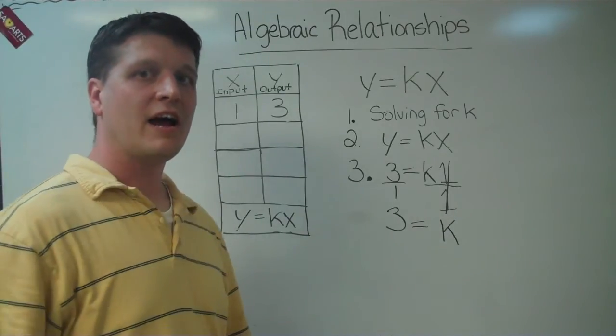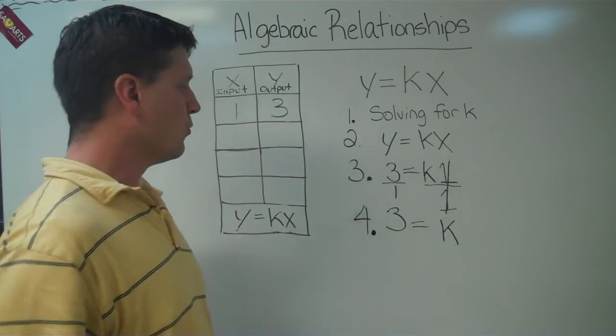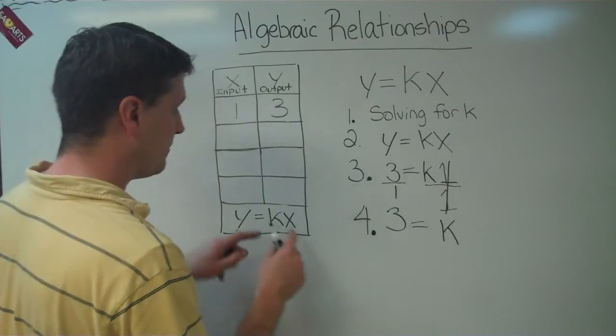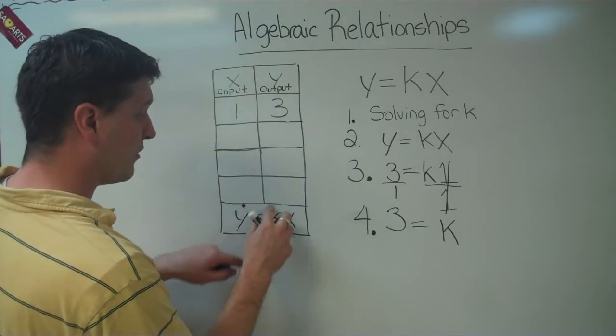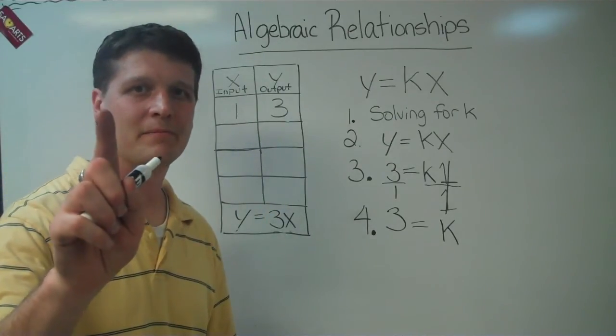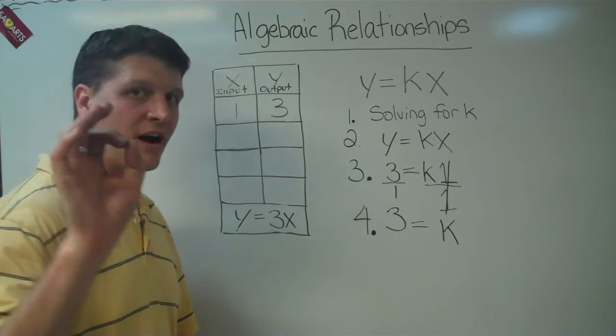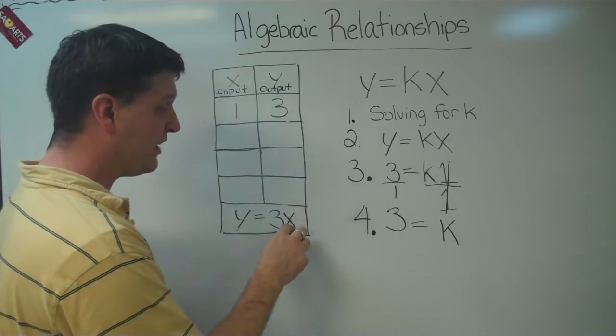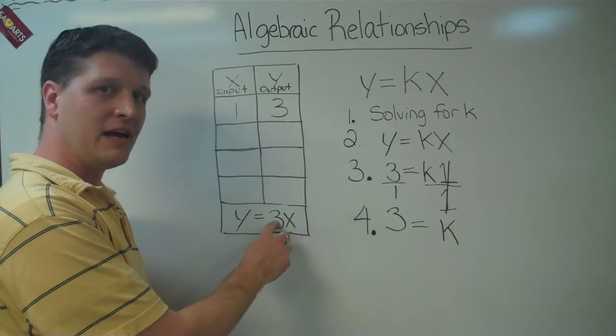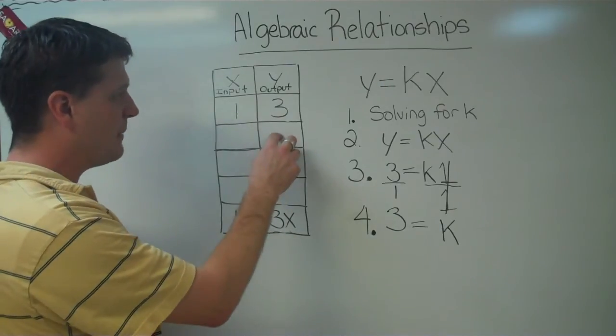Now that we have our k, this is our fourth step. We're going to take our variable that we know, and we're going to substitute it. We're going to put it right here in our little algebra box. In order to solve the rest of this table, whatever I have for the value of x, I'm going to put it right here. And I'm going to multiply times three. And what I get when I multiply the x times the three, it will give me my missing y value.